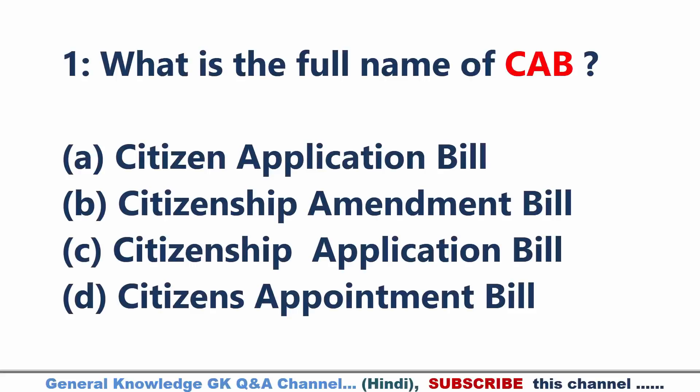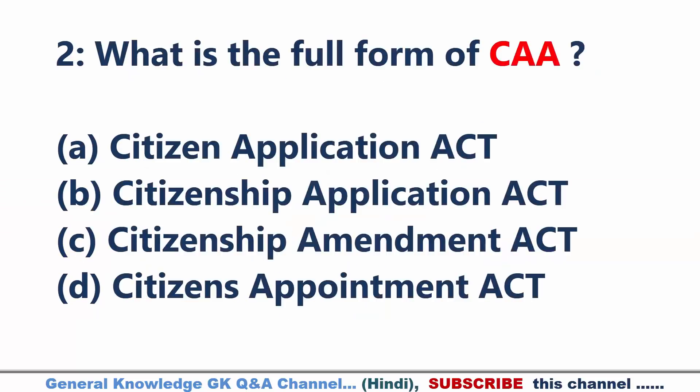What is the full form of CAB? Answer B: Citizenship Amendment Bill. What is the full form of CAA? Answer C: Citizenship Amendment Act.